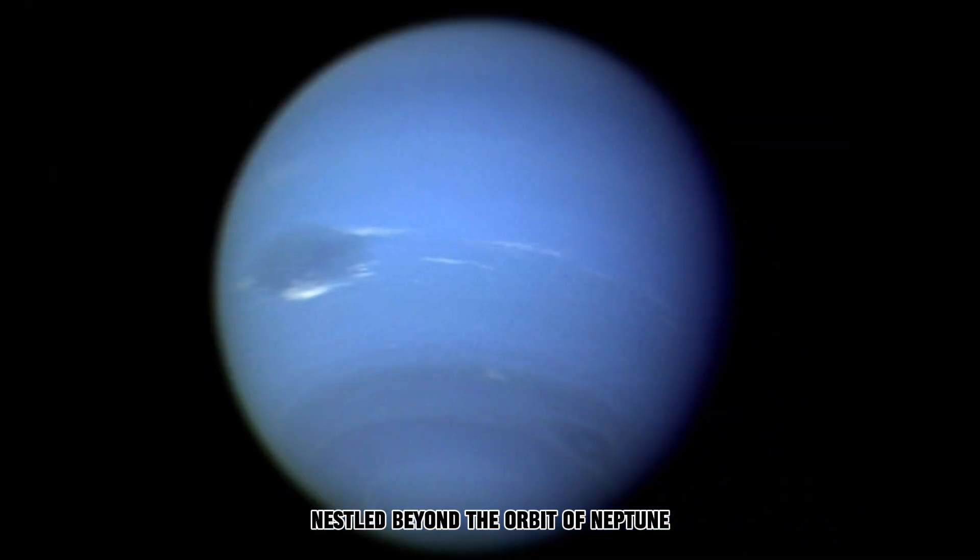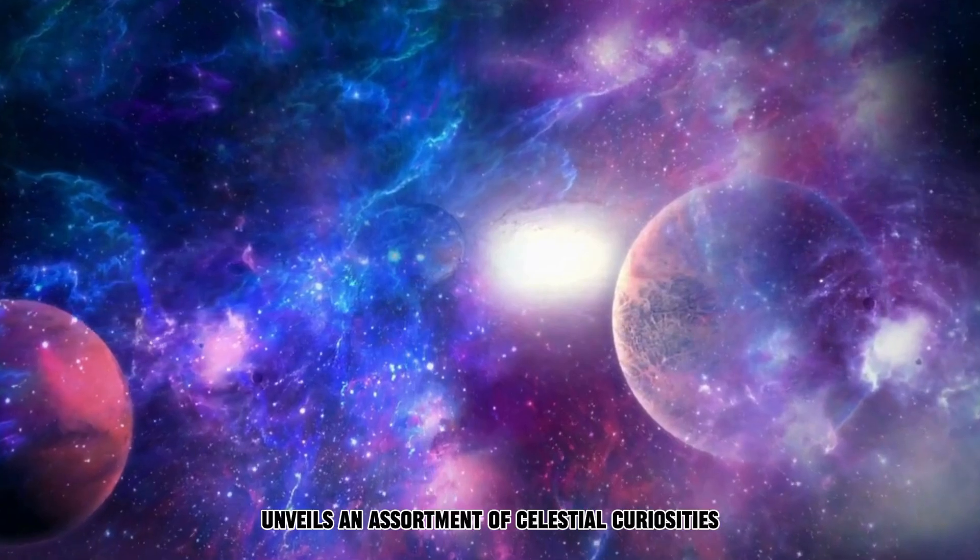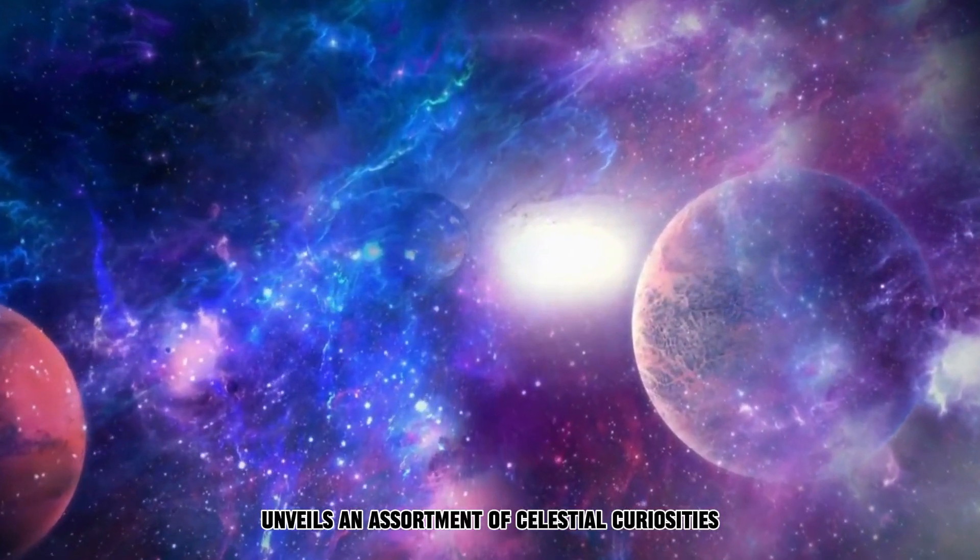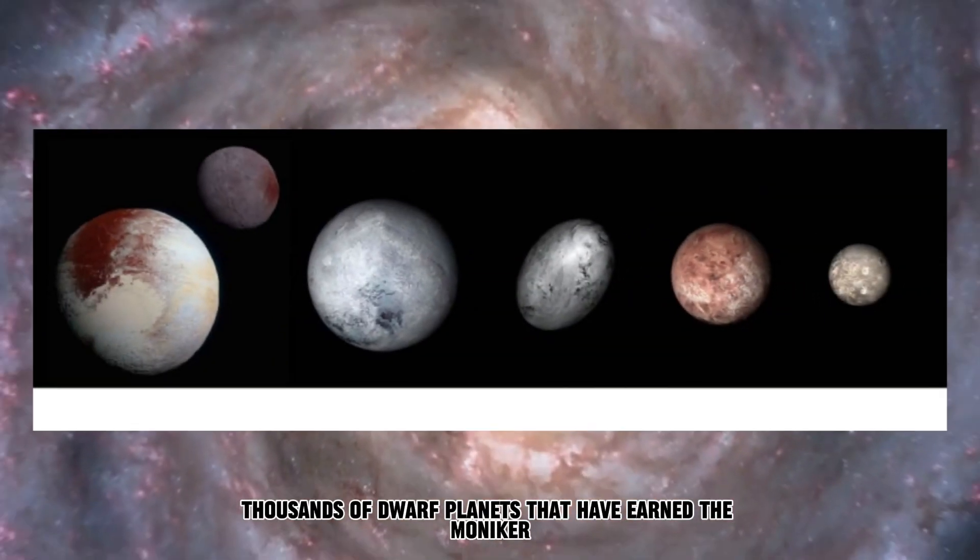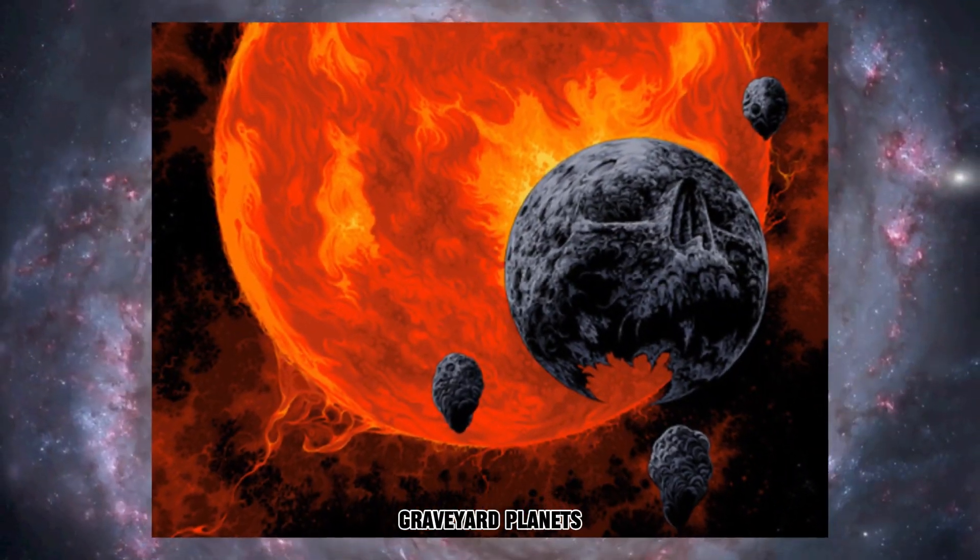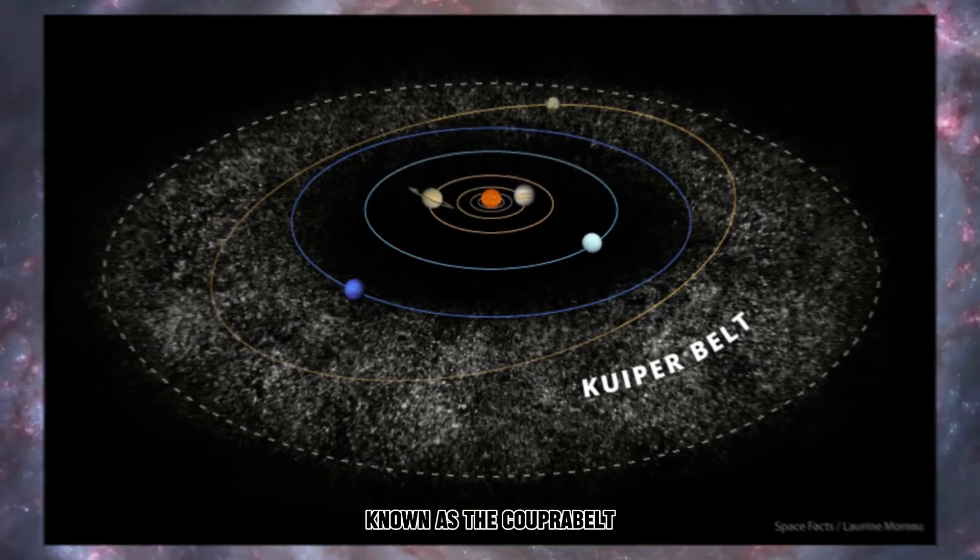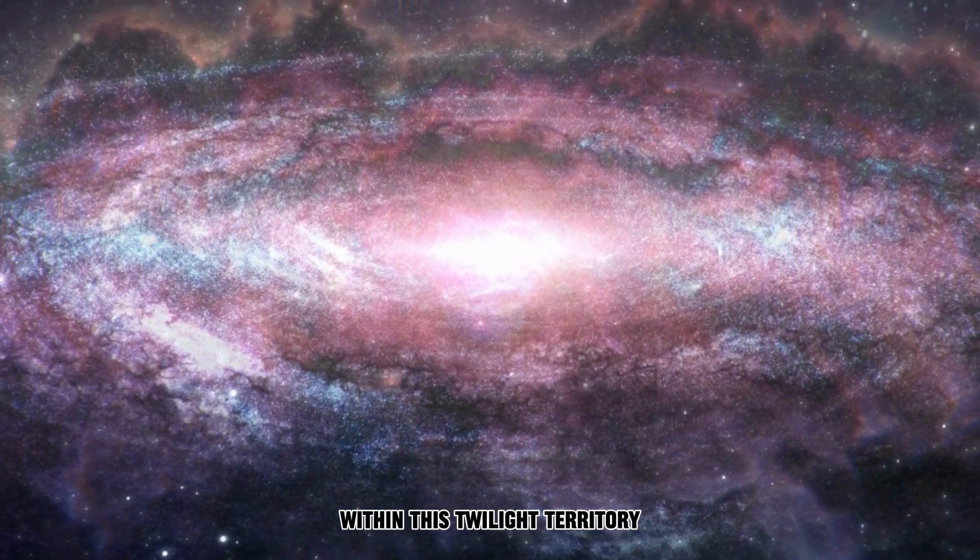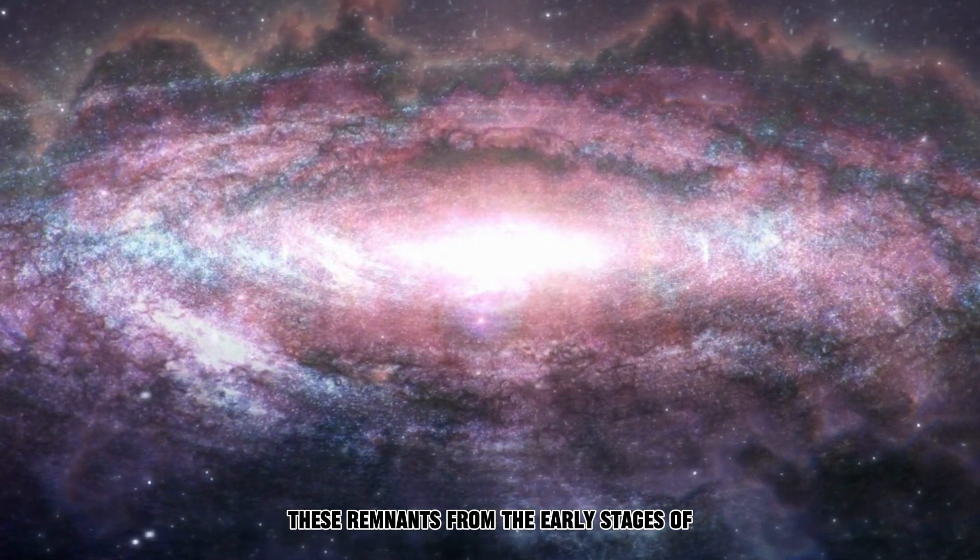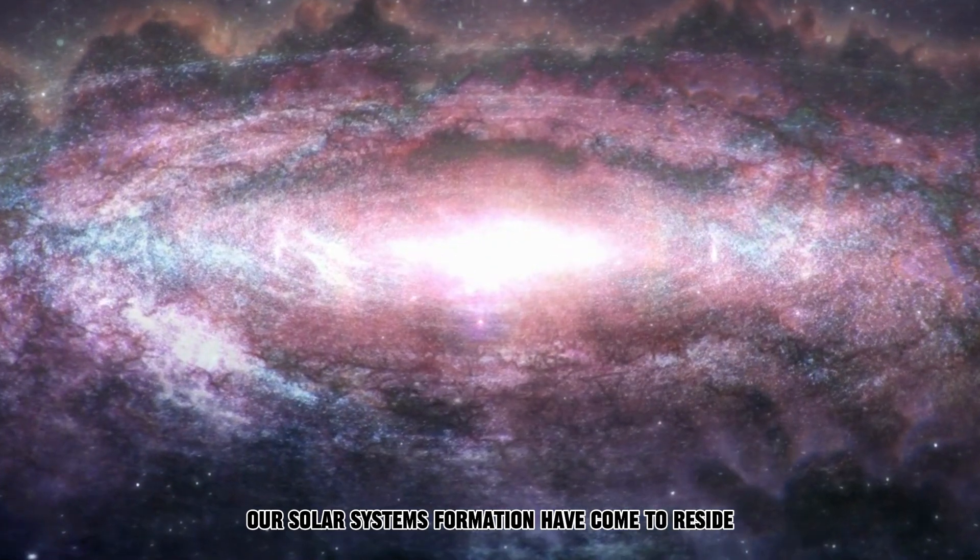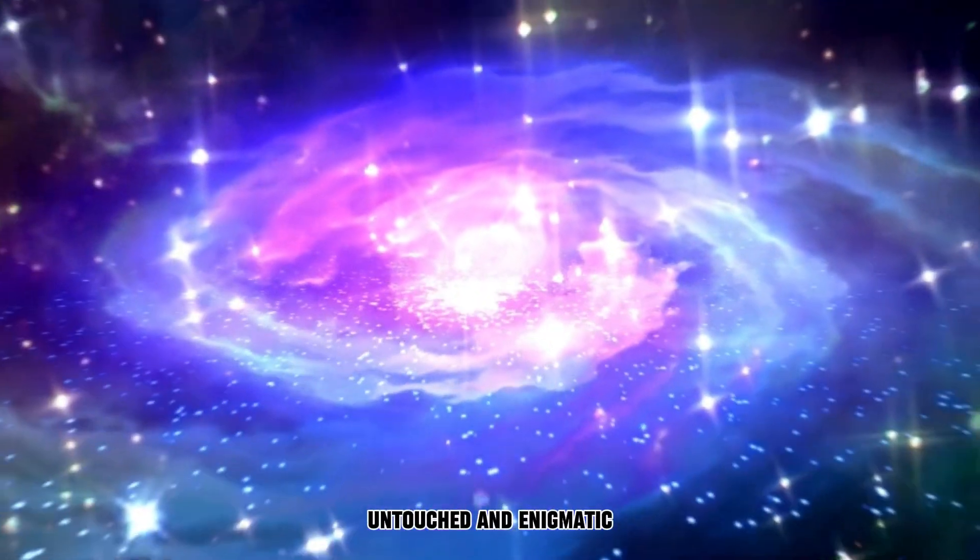Nestled beyond the orbit of Neptune, our cosmic backyard unveils an assortment of celestial curiosities. Thousands of dwarf planets that have earned the moniker Graveyard Planets, quietly inhabiting a remote expanse known as the Kuiper Belt. Within this twilight territory, these remnants from the early stages of our solar system's formation have come to reside, untouched and enigmatic.